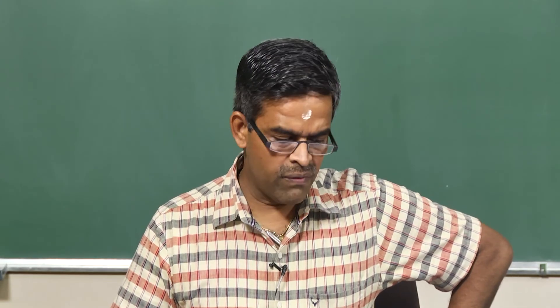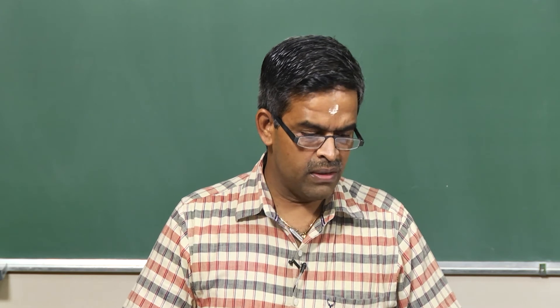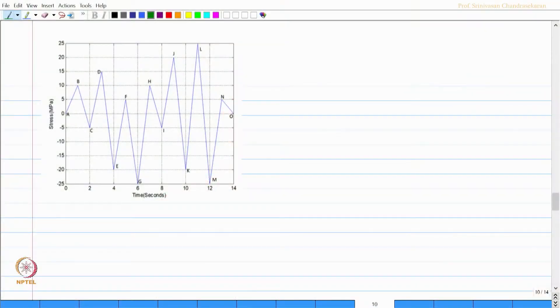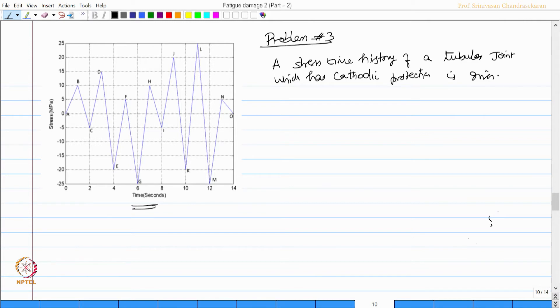We will do one more example which can be different from this. Problem number 3: a stress time history of a tubular joint which has cathodic protection is given. Take m value as 4 and log a value for cathodic protection as 14.917, which is advised by DNV recommended practice C203 table 2-3, which we also did in the last example.